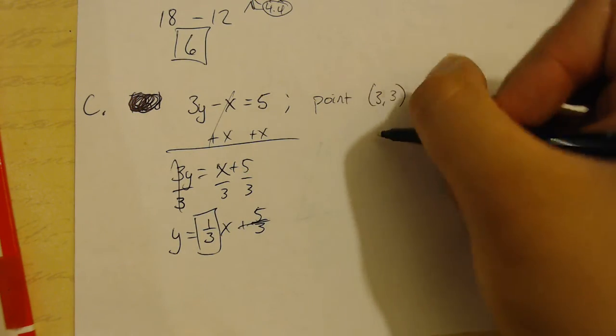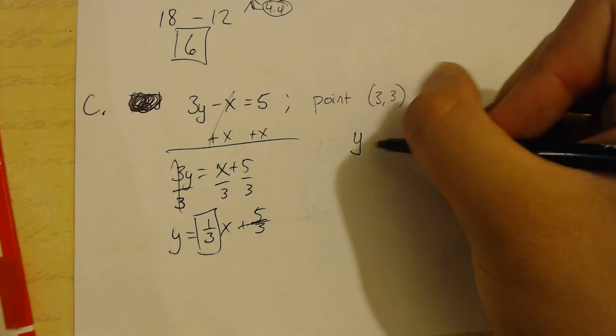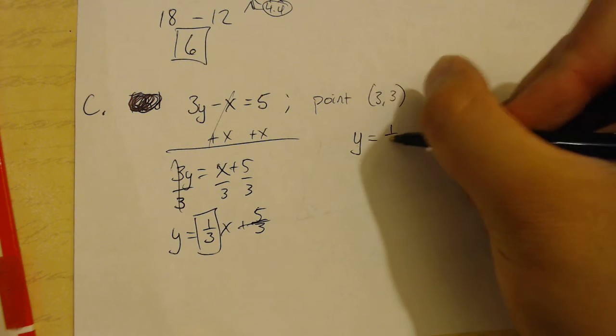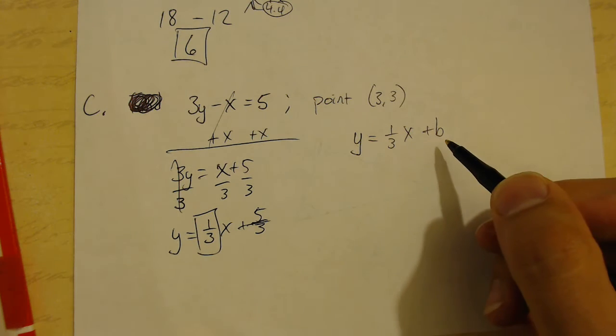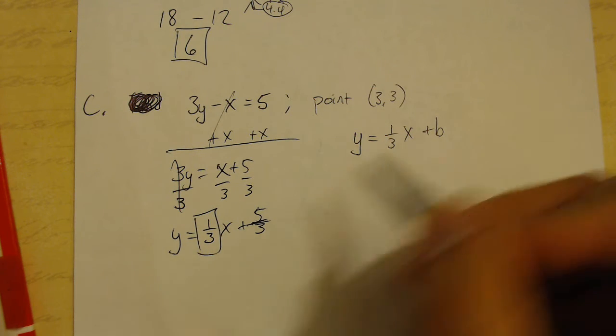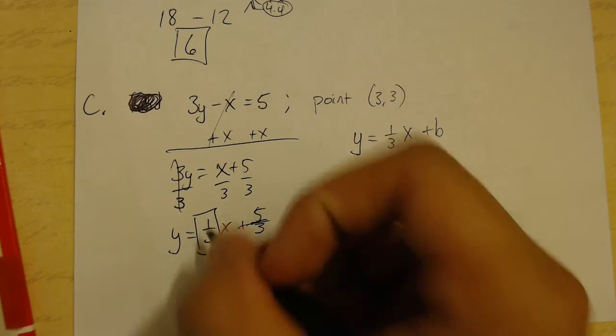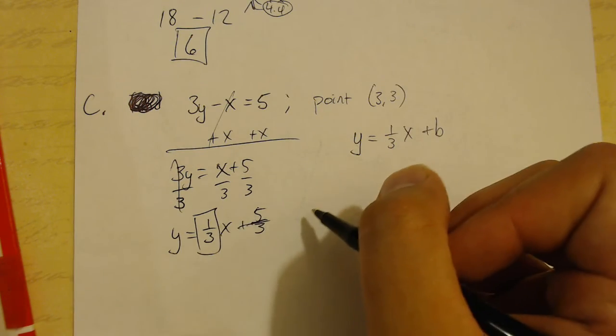And we're going to plug it into the line we're looking for. So, the line we're looking for is y equals 1 third x plus b. Now, we don't know what the b is going to be for our new line. But, they will have the same slope. So, we're done with this equation.